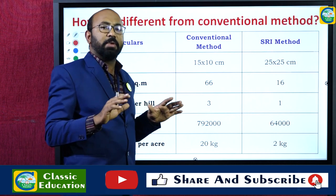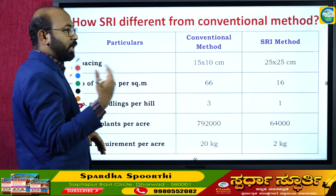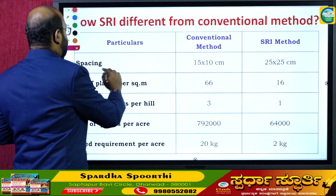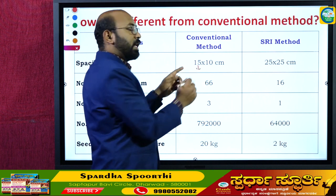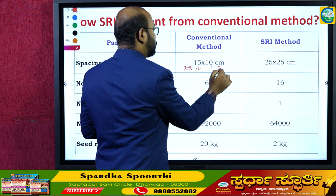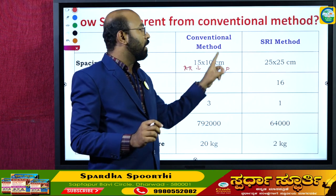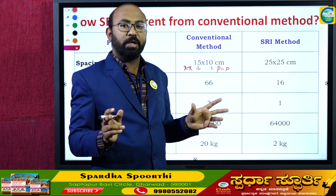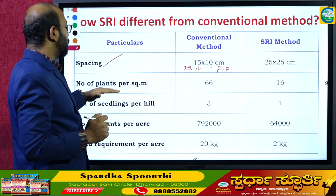How exactly is SRI different from the conventional method? There are four or five key characteristics. With respect to spacing: in conventional method it is 15 cm by 10 cm — 15 cm row to row, 10 cm plant to plant. But in SRI we practice square spacing, meaning equal distance between plants and between rows: 25 cm by 25 cm.